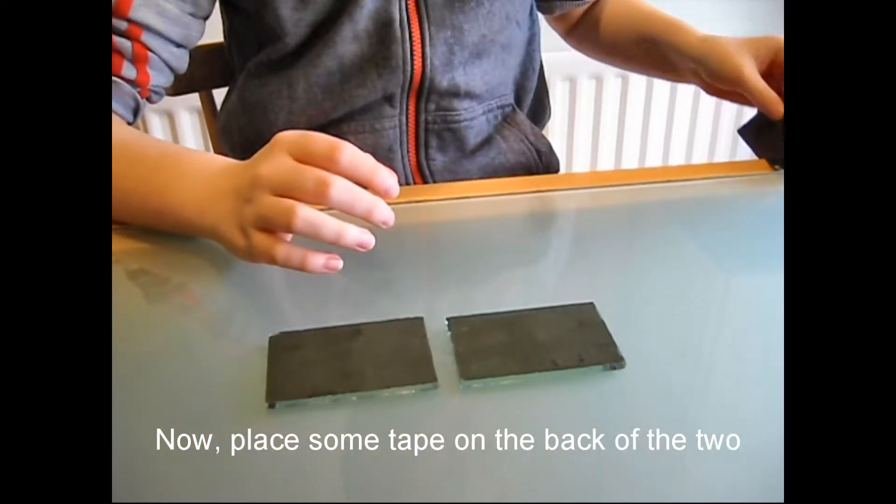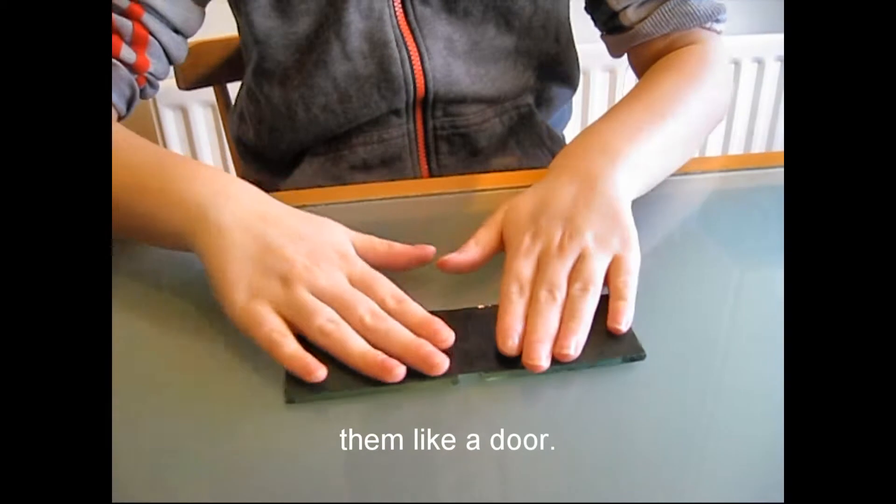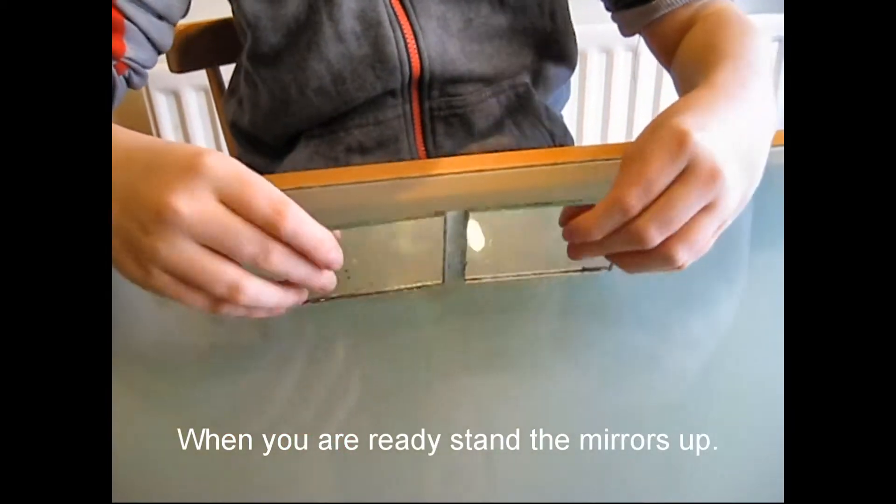Now, place some tape on the back of the two flat mirrors so that you can open and close them like a door. When you are ready, stand the mirrors up.